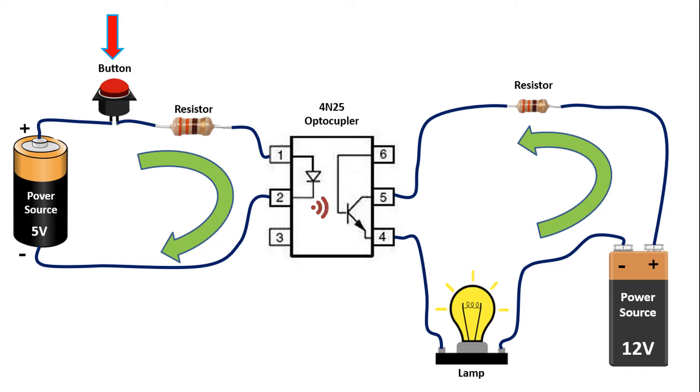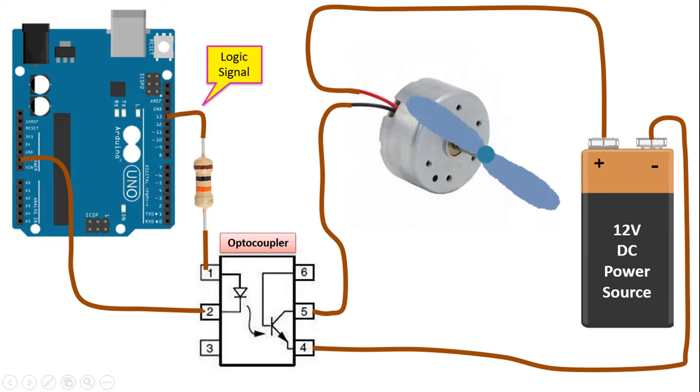We can give an example of where the optocoupler is used as the motor control circuit as you see here. In this circuit, we see that a motor can be controlled with the Arduino microcontroller circuit.